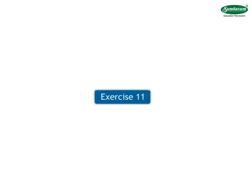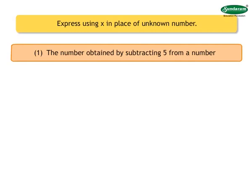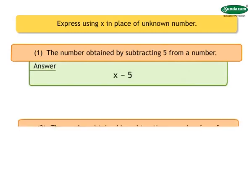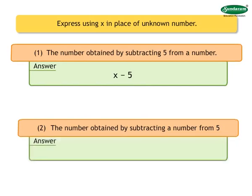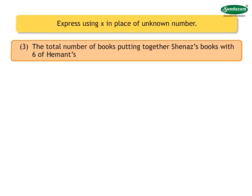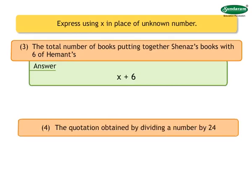Let us now solve exercise 11. Express using x in place of unknown number. Number 1: The number obtained by subtracting 5 from a number. Answer: x minus 5. Number 2: The number obtained by subtracting a number from 5. Answer: 5 minus x. Number 3: The total number of books putting together Shahnaz's books with 6 of Heymans. Answer: x plus 6.